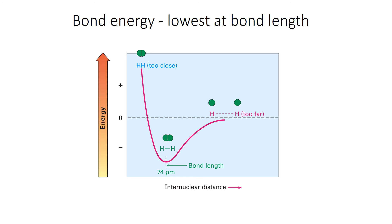Once a bond forms, the atoms don't sit static — they vibrate back and forth constantly. As atoms come in and overlap, they get too close and push apart, then the bond stretches and increases energy, so they pull back in. They keep stretching out and coming back in, vibrating because moving too far apart would be higher energy and getting too close would also be higher energy, so they wiggle back and forth in that intermediate region.